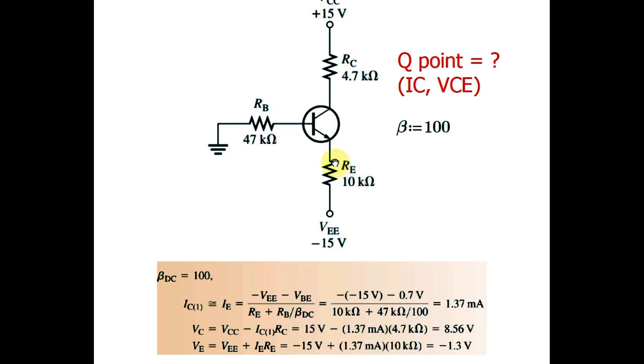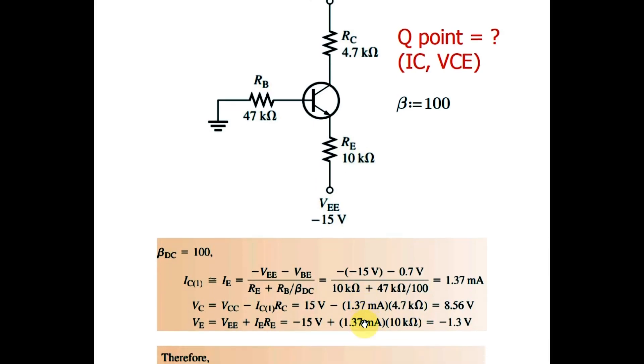Now you can easily find the value of VE. VE is given by VEE minus IE times RE. So minus 15 volt plus 1.37 milliampere times 10 kilohm, you will get VE equals to minus 1.3 volts.